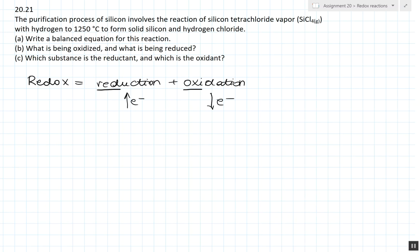Now that we know all of this, we can get on to solve the problem. For A, we have to write the balanced equation of this reaction, so we know that silicon tetrachloride vapor reacts with hydrogen vapor at 1250 degrees Celsius to form solid silicon and hydrogen chloride vapor.